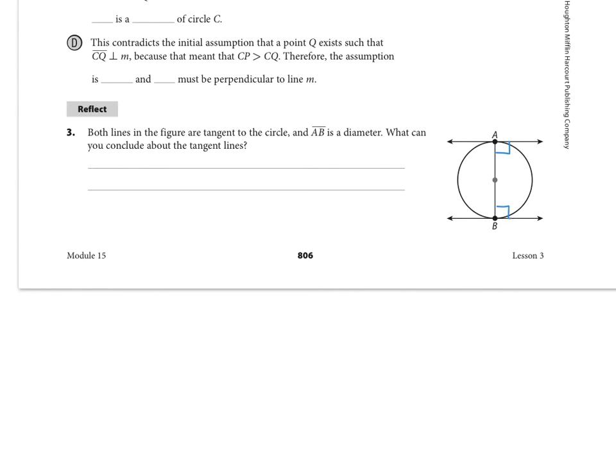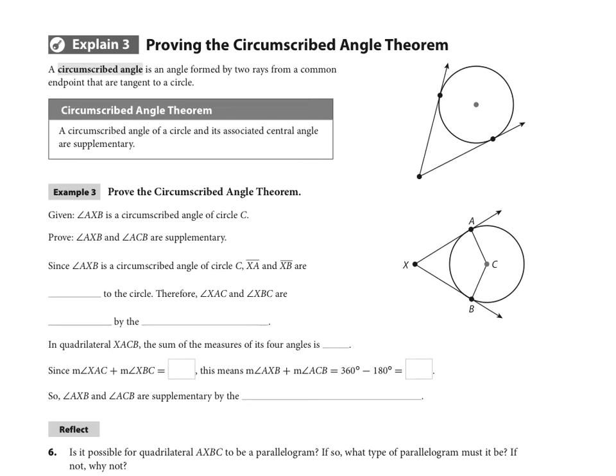Okay, the next thing we're going to do is skip over to page 808, and on page 808 we have Explain 3 where we're talking about circumscribed angles.